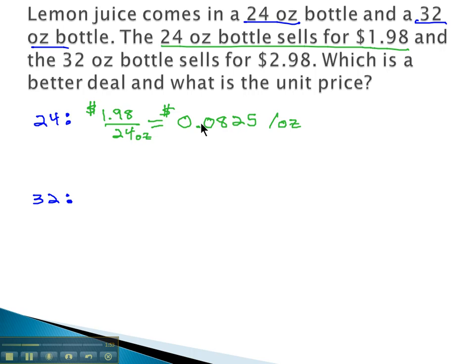To make it a little easier to say, I like to change these to cents per ounce, which just means we have to move the decimal twice. It's 8.25 cents per ounce for this 24 ounce bottle of lemon juice.